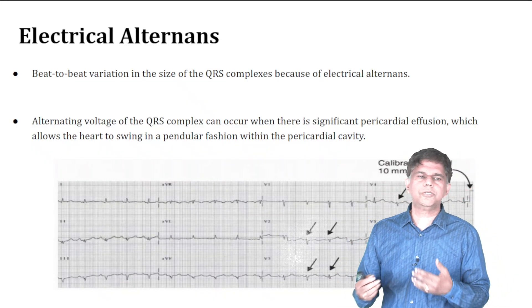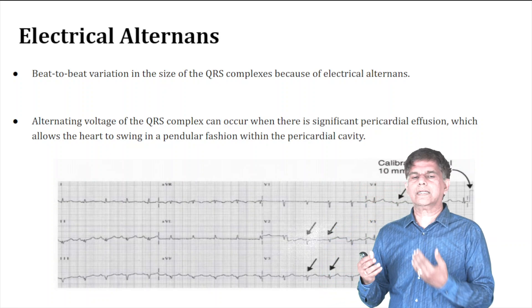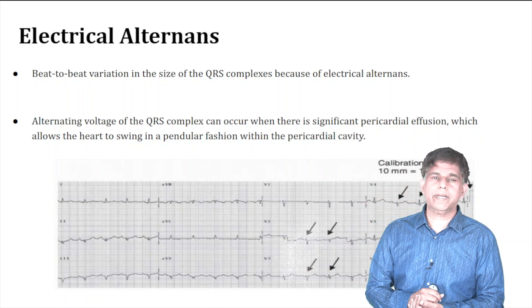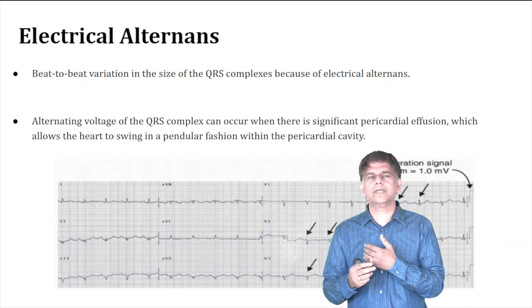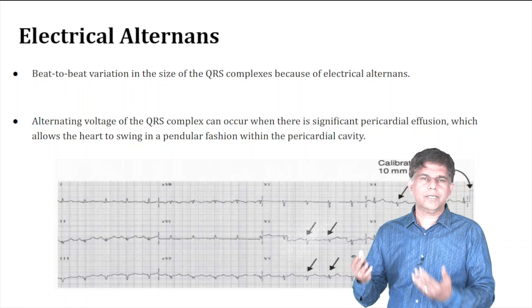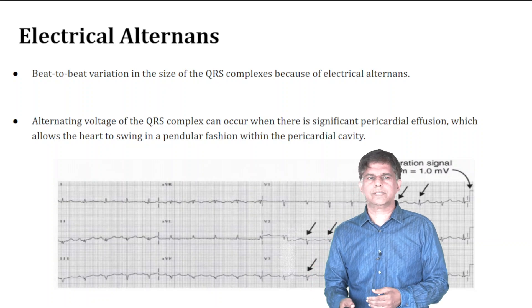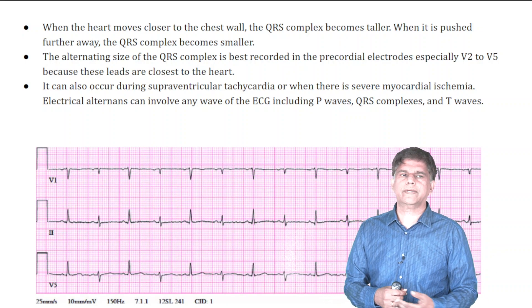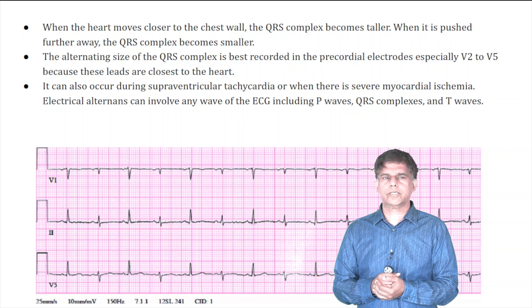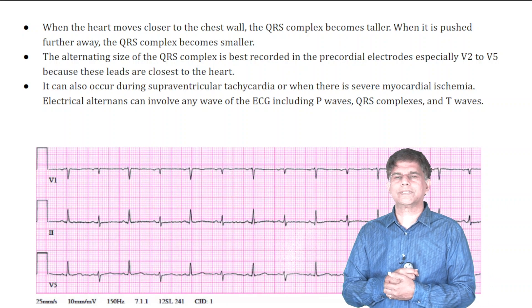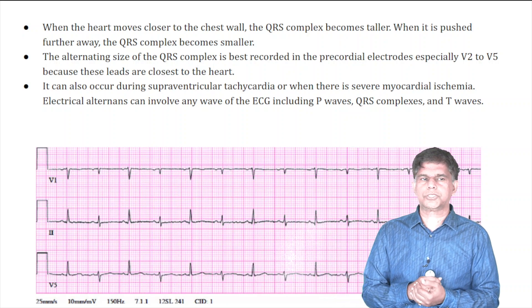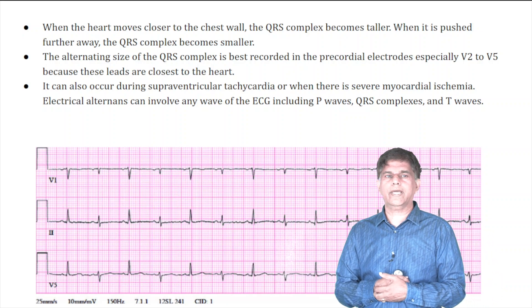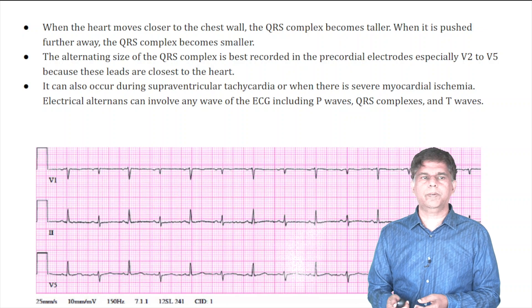Electrical alternans is a beat-to-beat variation in the size of the QRS complex. It occurs mainly when there is a significant pericardial effusion, which allows the heart to swing in a perpendicular fashion within the pericardial cavity. When the heart moves closer to the chest wall, the QRS becomes taller; when pushed further away, it becomes smaller. This alternating pattern is best recorded at the precordial electrodes, especially V2 to V5. It can also occur with SVT or severe myocardial ischemia, and may involve the P wave, QRS complex, and T wave.